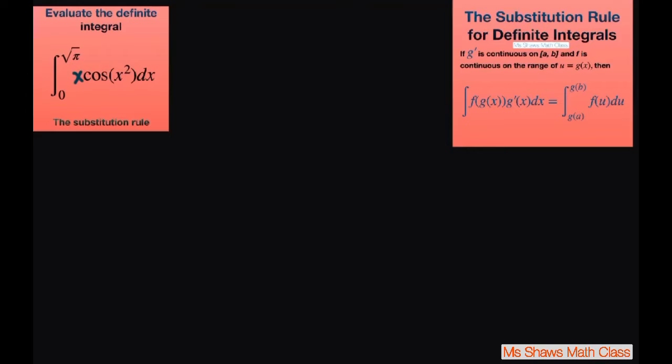Alright, and we proceed as usual. We're going to let u equal this quantity here. So derivative of u with respect to x equals 2x, or you can cross multiply and say du equals 2x dx.